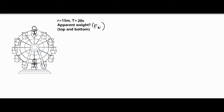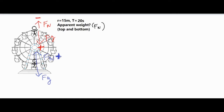Looking at the force diagram for each person, we have a force of gravity and a normal force. For the person at the top, the force of gravity is pointing towards the center of the circle — the centripetal direction. Anything moving in circular motion has a net force pointing toward the center, so that's positive. Anything pointing away from the center is negative. At the bottom, the normal force points toward the center so it becomes positive, and gravity points away so it becomes negative.